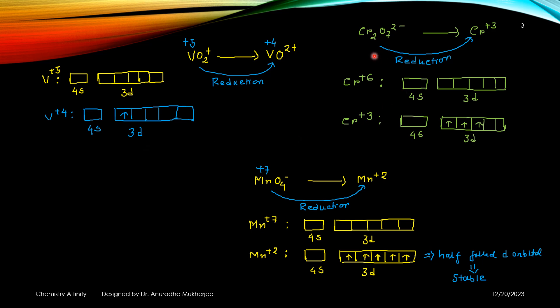Next it's Cr2O7^2-, chromium to chromium plus 3 reduction takes place. In chromium plus 6, it is 4S0, 3D0, but chromium plus 3, it is 3D3.